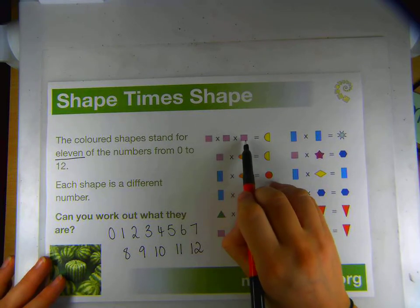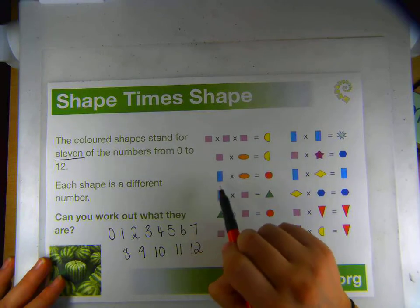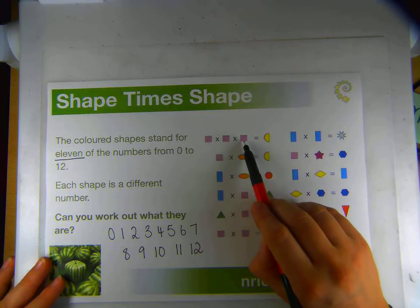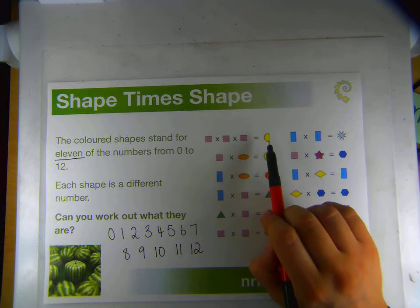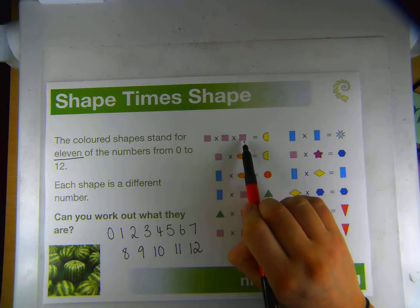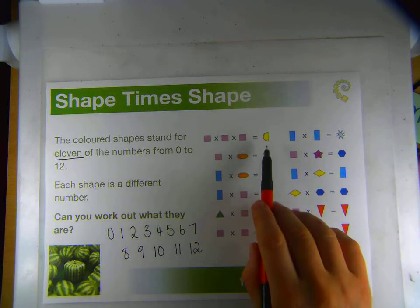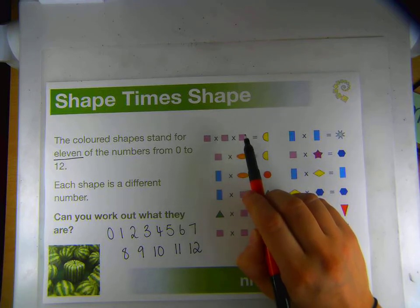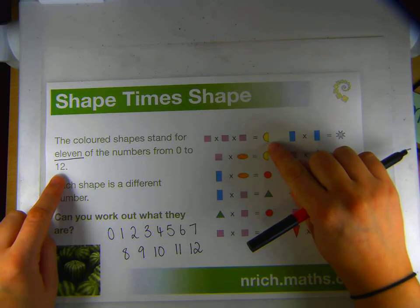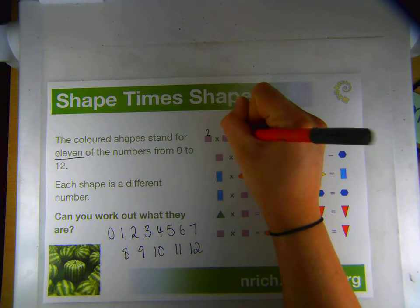If we said 0 times 0 times 0, the answer would be 0, but the answer here is different so it can't be 0. 1 multiplied by 1 multiplied by 1 would still be 1 because anything multiplied by 1 stays the same — and the answer here is different, so it can't be 1 either. Let's think about 2: 2 times 2 is 4, times 2 again is 8. Because 8 is less than 12, that's a possibility. Let's try 3: 3 times 3 is 9 times 3 again is 27 — that's more than 12, so it can't be 3. Similarly it can't be any larger number. So this shape must be 2.